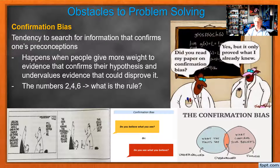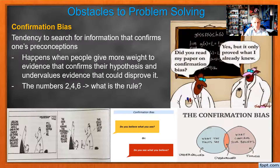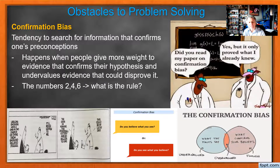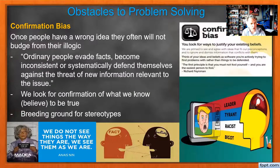Confirmation bias is where we want to take something we already know to be true, then look for evidence that supports it — because we want our hypothesis to be true. So we're going to look for evidence that supports what I already believe. This is the reason why liberals will watch MSNBC and conservatives will watch Fox News — that's going to give them the information they already believe to be true, and it makes us feel better, gives us a little bit of a dopamine rush.